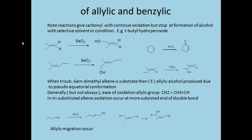For allylic and benzylic oxidation using selenium oxide, the allylic position is oxidized. Here we see two methyl groups and one methyl group — this allylic position is oxidized using selenium oxide. Most of the time, carbonyl compounds such as aldehydes and ketones are produced, but we can stop the reaction at the alcohol level using different solvents and conditions. Tributyl hydroperoxide is used for stopping the reaction at the alcohol level.